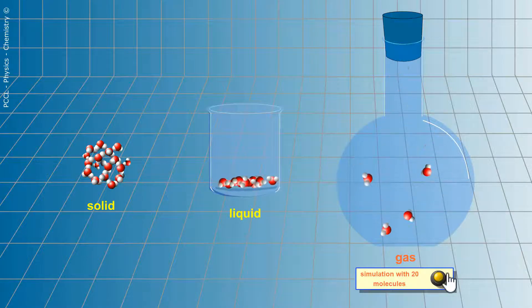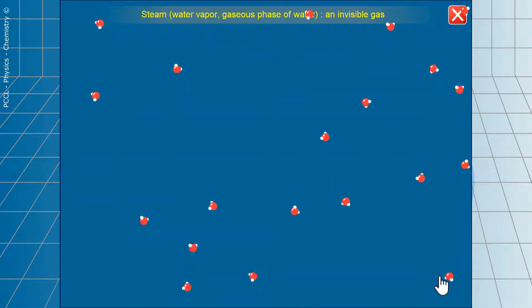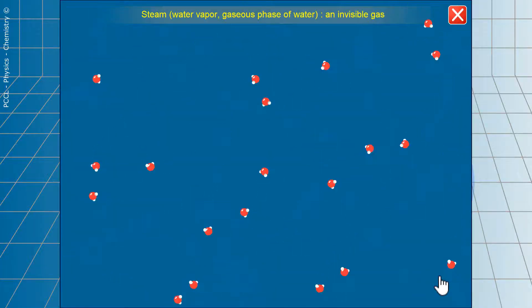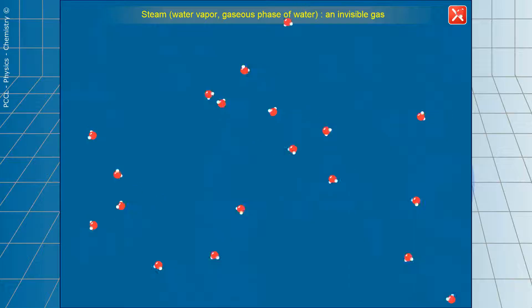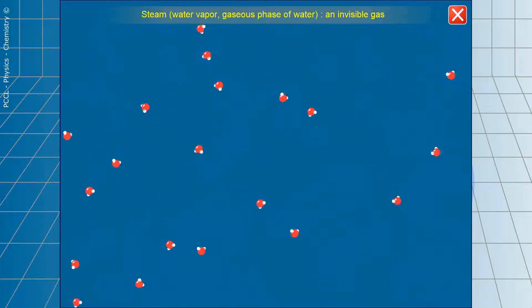If we consider a model with about 20 molecules, it could be something like that. The molecules collide with each other and also knock against the wall.